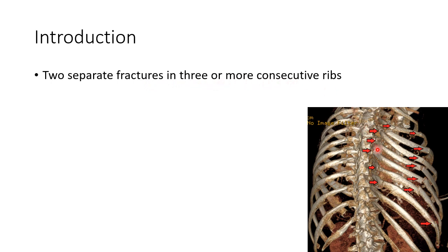This picture shows flail chest. As you can see, there are two separate fractures in three or more consecutive ribs.